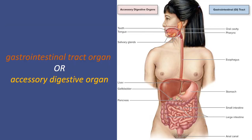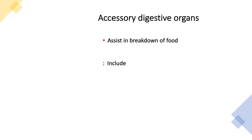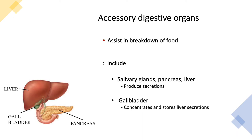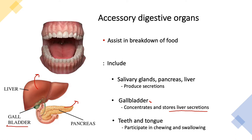Here we have an image showing GI tract organs on the right and accessory digestive organs on the left. Accessory digestive organs assist in the breakdown of food in a couple of ways. Some produce secretions — for example, salivary glands secrete amylase, the pancreas can secrete insulin, and the liver secretes bile. The gallbladder doesn't produce anything but concentrates and stores bile. Others, like teeth and tongue, simply participate in chewing, swallowing, and manipulation of food.